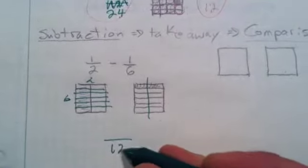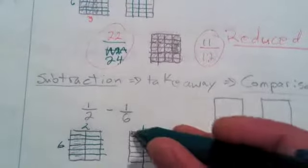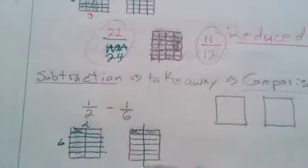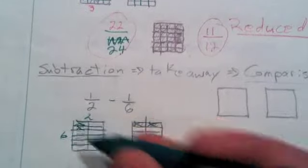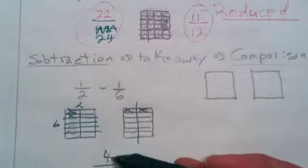And for comparison, this piece I could match with that piece, this piece matches with that piece, and then I have one, two, three, four pieces left over.